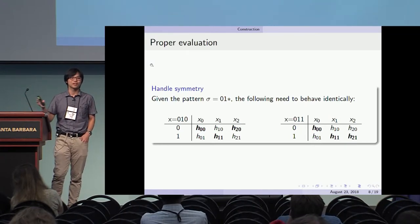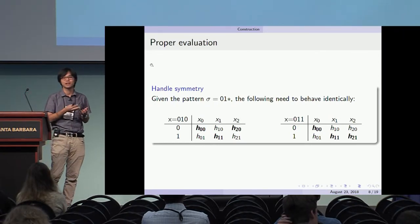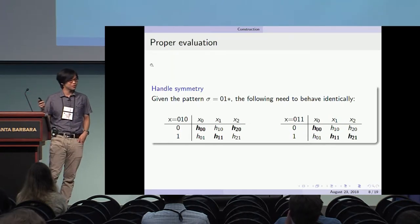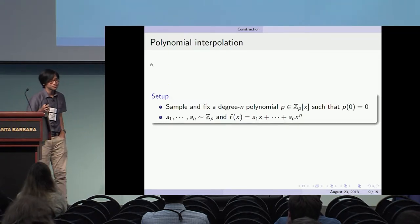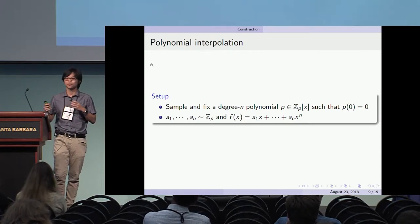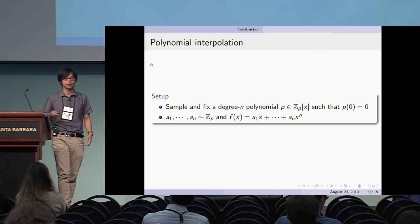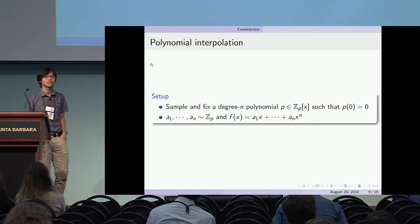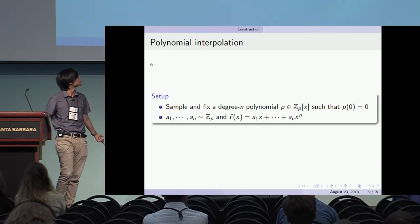The solution we use is the standard technique of polynomial interpolation. It doesn't matter which samples you get — as long as you have n unique samples, you can construct the same interpolating polynomial. The setup is: sample a polynomial p such that p(0) = 0. You can do this by sampling coefficients for the first through nth terms and constructing the polynomial as a sum.